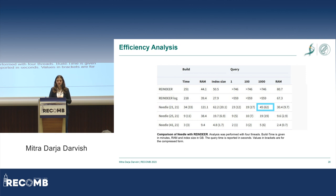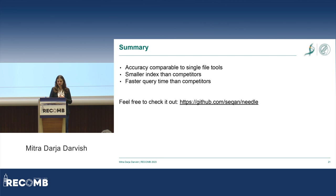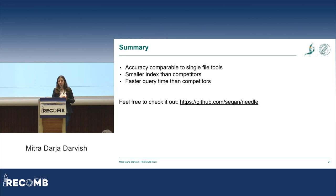We can also go to the minimizer level, where we have even less data stored and achieve even better speed and space performance. To summarize, we have accuracy comparable to single-file tools like Kallisto and Salmon.